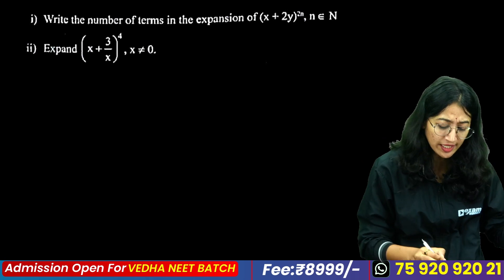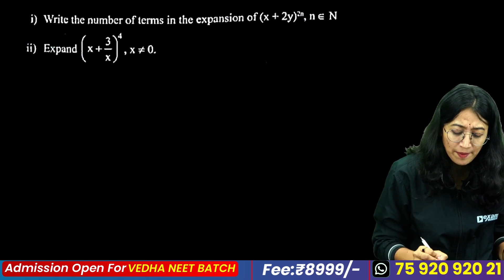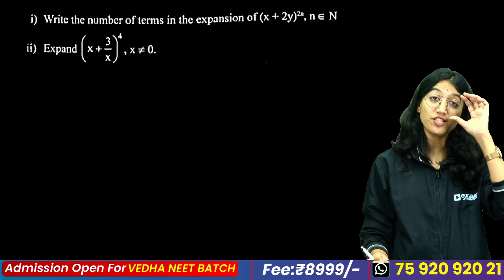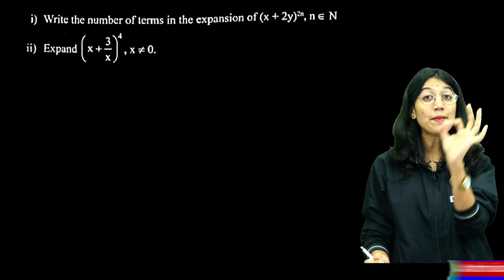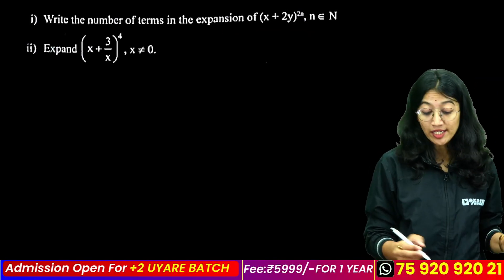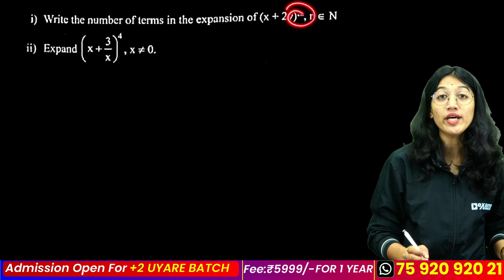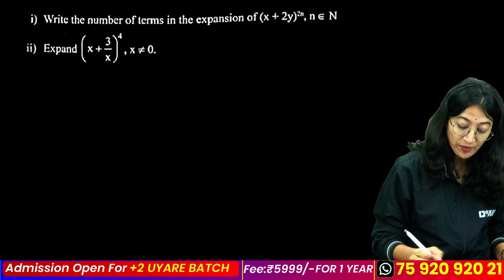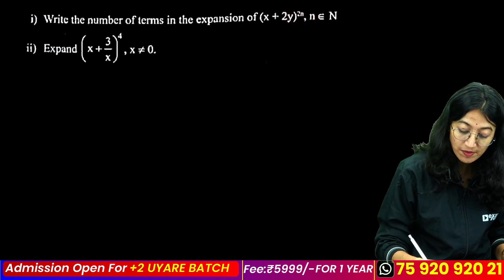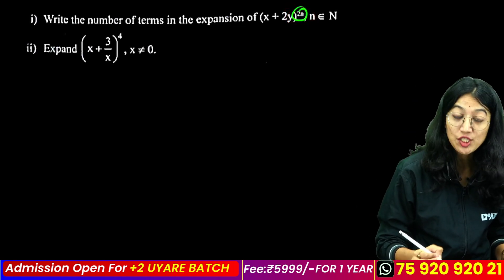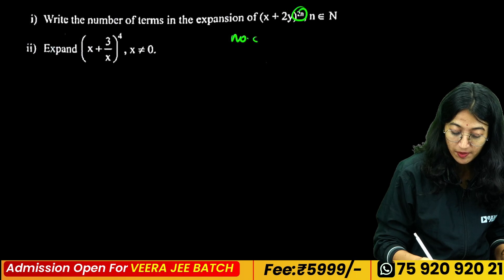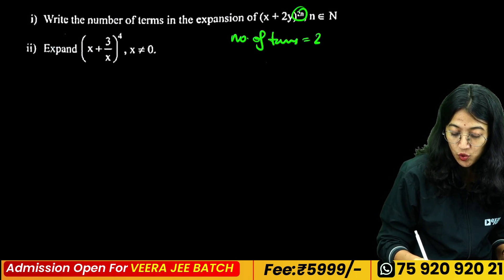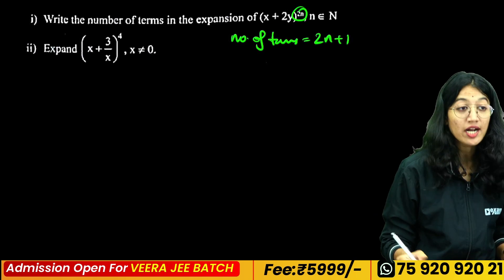The first question is: the number of terms in the expansion of (x + 2y) raised to n. Is the number of terms always 2n, or is it 2n plus 1?